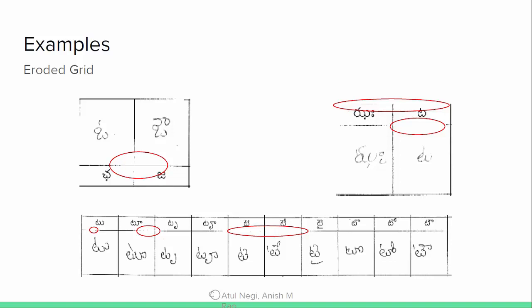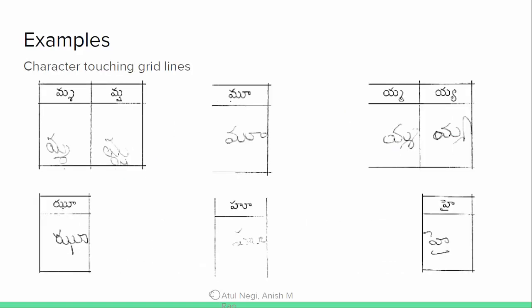Some examples are shown here. The first example is where the intersection of the grid line has vanished. The second example shows drop-off in the grid line. Resisting the character with the grid lines is a challenge. Further examples show that the character may be touching the grid line on the right, on the top, on the bottom, or on the left. There are many different ways the character can touch the grid line, and that causes a problem for extraction.